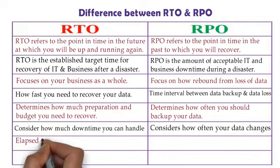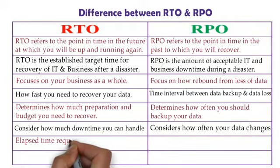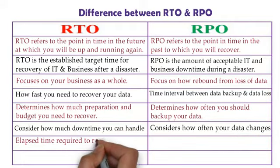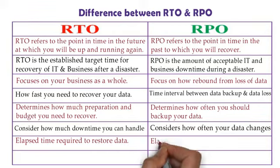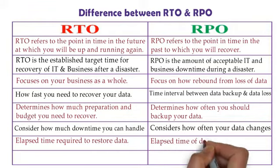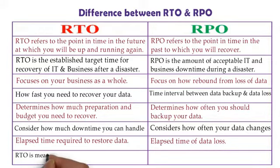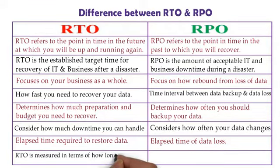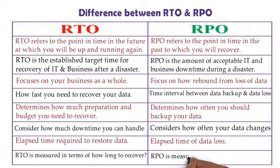RTO is the elapsed time required to restore data. And in RPO, it is the elapsed time of data loss. The last point is RTO is measured in terms of how long to recover. On the other hand, RPO is measured in terms of how far back.